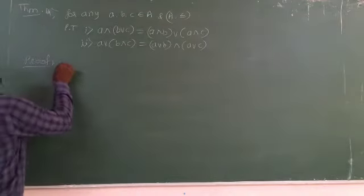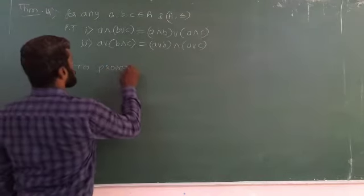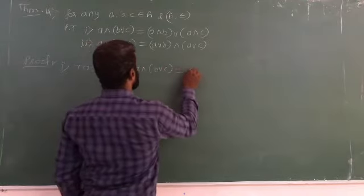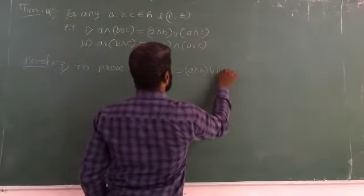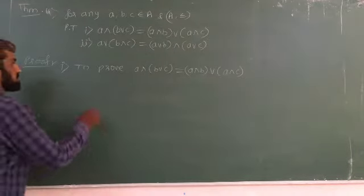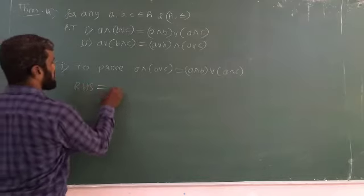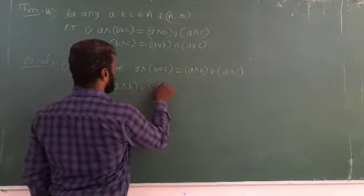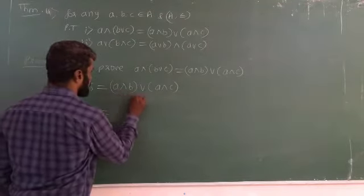To prove A meet B joint C is equal to A meet B join A meet C. To prove this, take RHS. That is equal to A meet B.